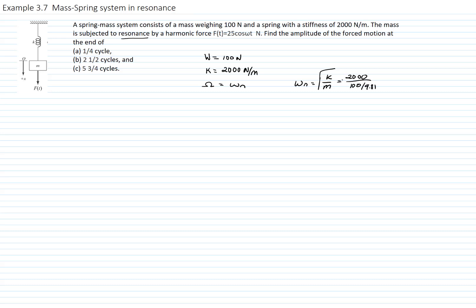The natural frequency gives us a value of 14.007 radians per second.